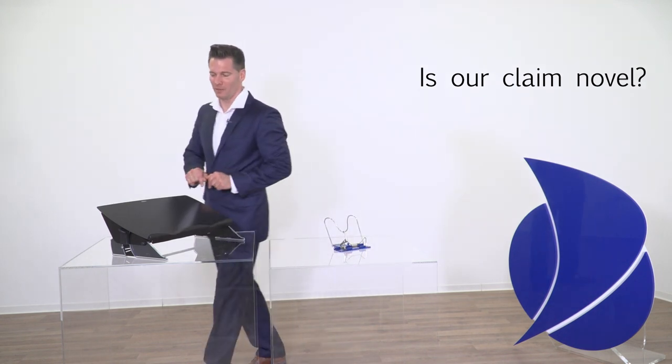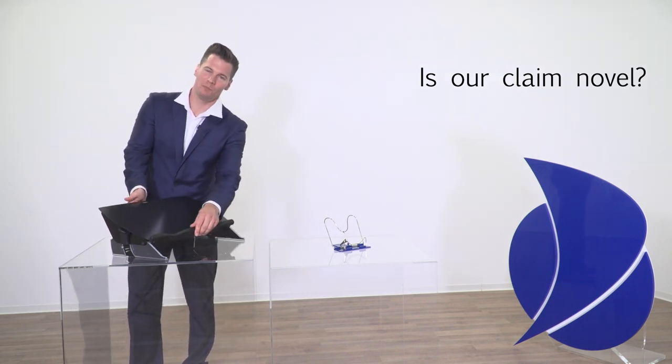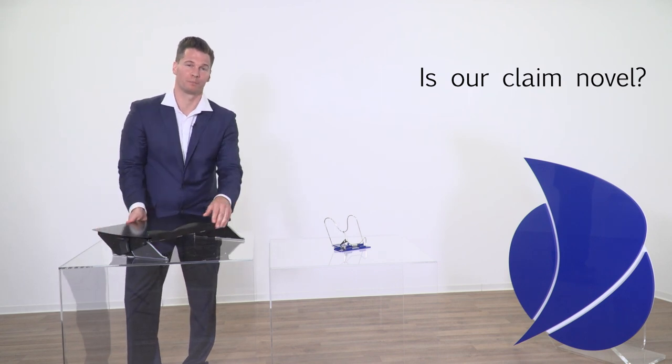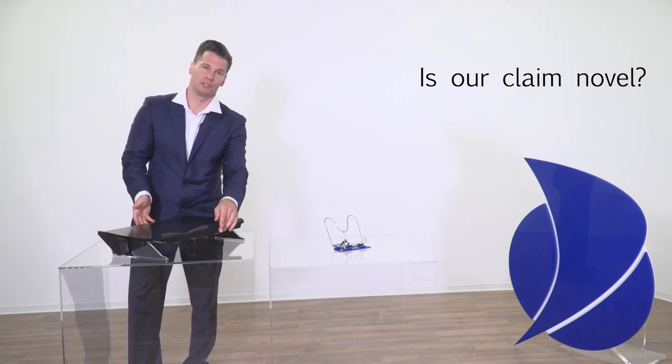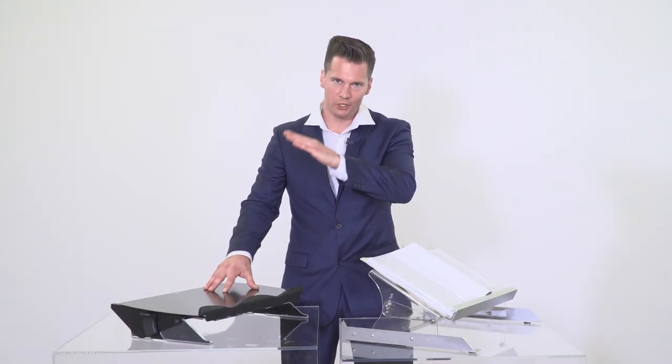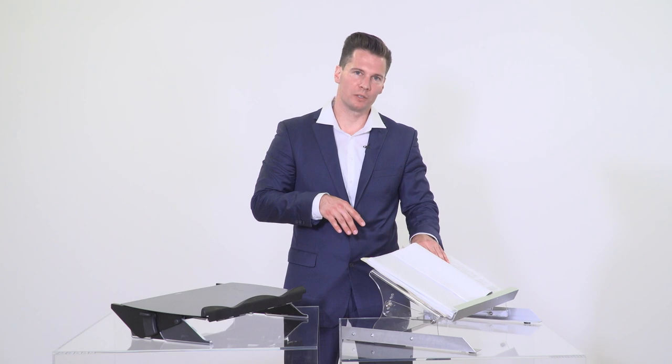However, this embodiment of the prior art shows a guidance which can be brought into an almost horizontal configuration. In this configuration, it anticipates the claimed subject matter. Let's take a closer look at the differences. The prior art provides a guidance, the inclination of which can be adjusted, whereas our invention provides an inclination and at the same time a horizontal guidance.